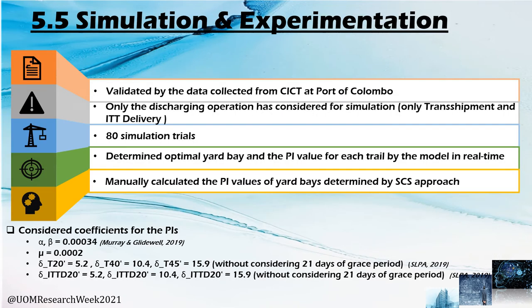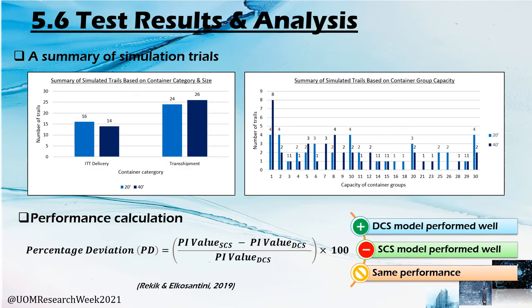When it comes to experimentation, we did 80 simulation trials by providing yard conditions manually to the model, and we determined yard locations from the dynamic container stacking model and calculated performance indicator values for both dynamic container stacking and the yard locations given by the yard planners. To compare the performance of dynamic and static container stacking, we used a performance deviation calculation. Positive values mean the dynamic model performed well, negative means static performed well, and zero means equal performance.